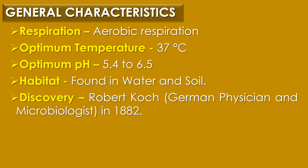Next, the mode of respiration. The mode of respiration observed in Mycobacterium tuberculosis is aerobic respiration. The optimum temperature required for cultivation is 37°C and optimum pH is 5.4 to 6.5. The habitat is usually water and soil. Regarding the discovery, Mycobacterium tuberculosis was discovered by Robert Koch in the year 1882.